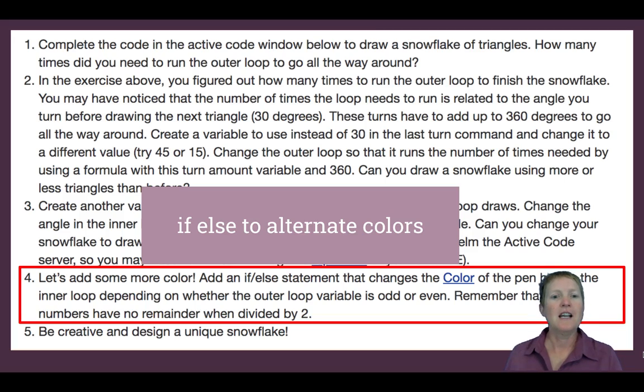One more to go. This is just to do something fun and bring back some learning from unit three. Add an if statement that changes the color of the pen before the inner loop, depending on whether the outer loop variable is odd or even. Now don't do what I did. I saw outer loop variable and I thought, oh, you mean like the number of times I'm running the outer loop. But that's not what it says. This means we should probably say the outer loop controlling variable is odd or even.